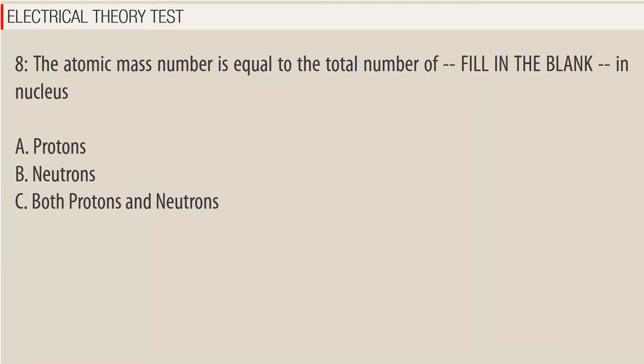Question 8: The atomic mass number is equal to the total number of — fill in the blank — in the nucleus. A. Protons. B. Neutrons. C. Both protons and neutrons.